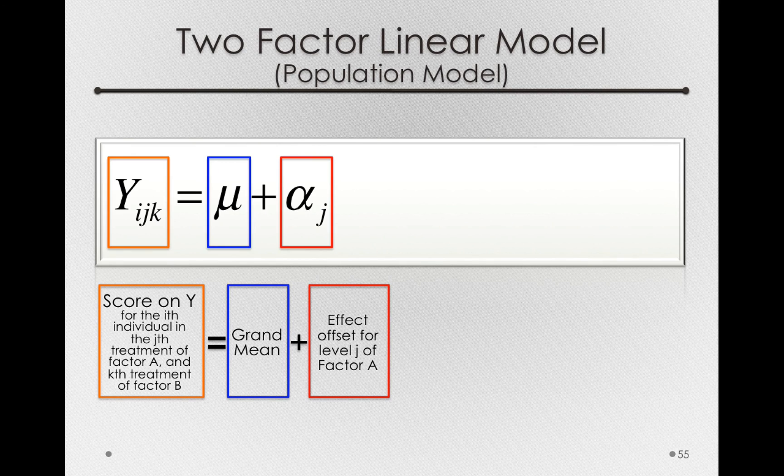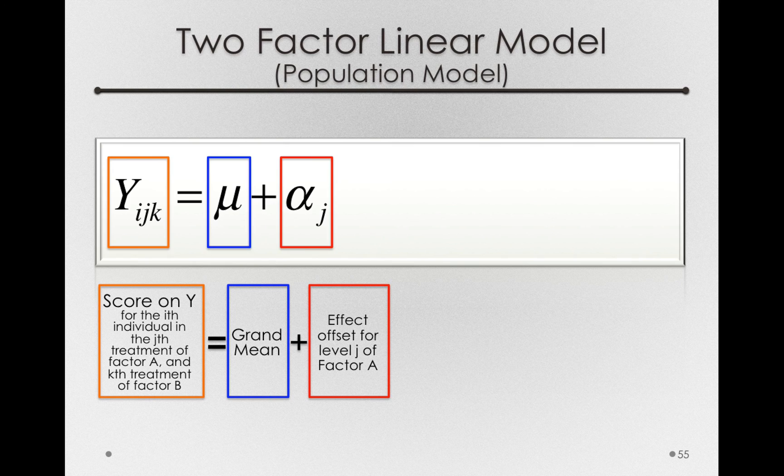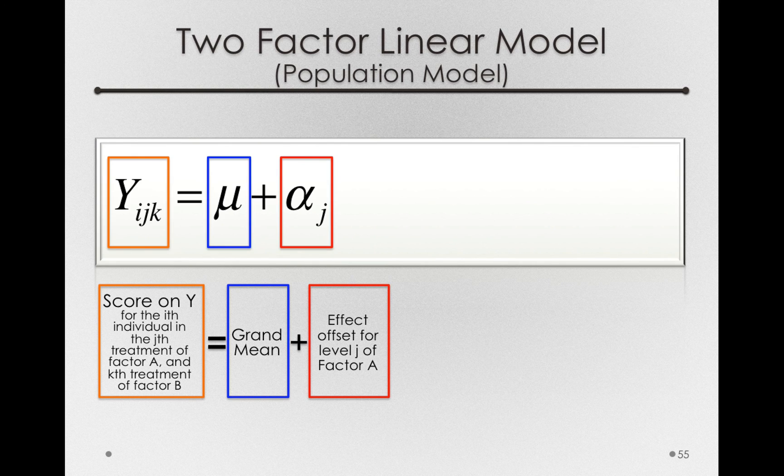Factor A in our model will simply be route, and so our alpha_j's will be the offsets associated with the two different routes. I want to pause and note that alpha here doesn't refer in any way to alpha level. It's simply the A in the Greek alphabet, so we use alpha here to refer to the offsets of factor A.